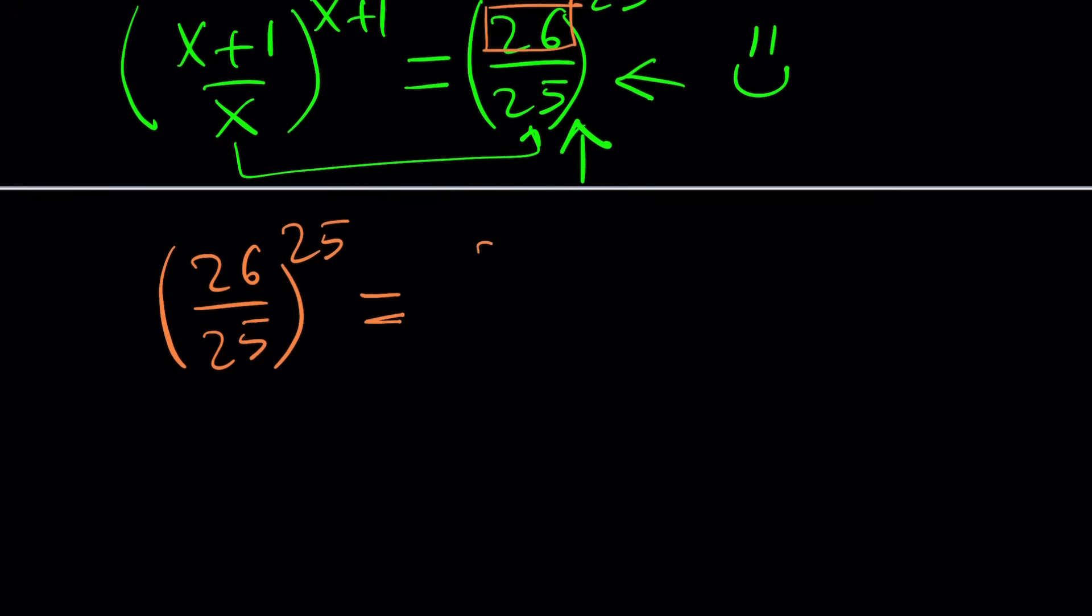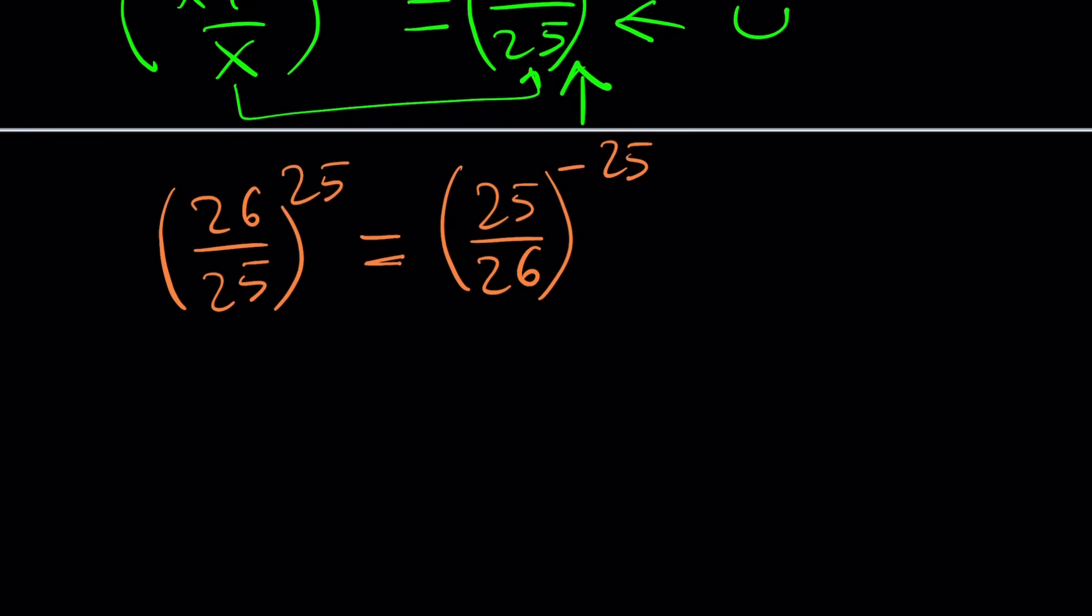So, I'm going to go ahead and flip this to 25/26. And then, of course, that changes the exponent and makes it negative 25. Now, you might still be questioning like, hey, what is so significant about it? Because even if I set it equal to this, let's go ahead and do that, it doesn't seem to be working. Is it working? Let's take a look.